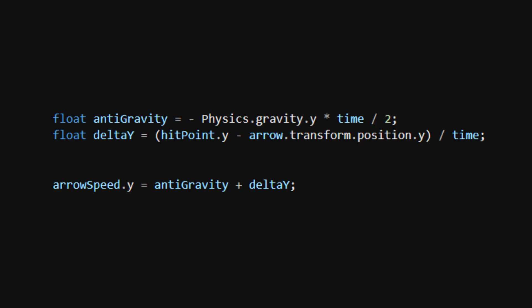So you basically need two variables. First compensate for gravity during time projectile is flying. And second compensate for vertical position delta between attacker and a target. And just set projectile vertical speed to their added value.